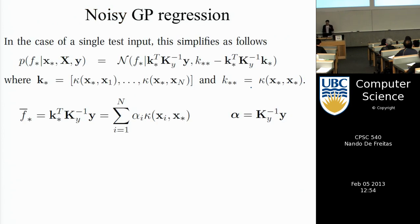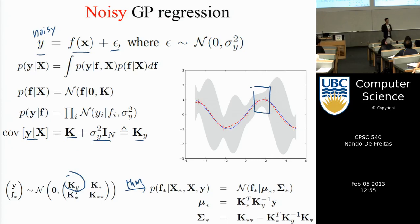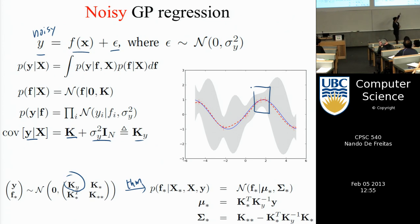That's essentially all there is to GPs. To fit a GP to data: construct a matrix K using the similarity kernel. If you have noise in the data, add sigma — the variance of the noise — to the diagonal of K, giving you your K_y matrix. If you've rescaled the data to zero mean, then code the two equations for mu-star and sigma-star. That gives you the mean prediction and confidence interval for any point x-star. The code is really simple.